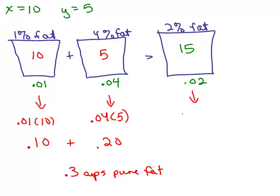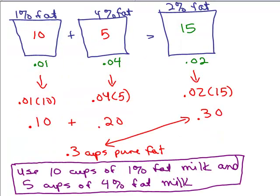And that should be the same as what's in my mixture. So what's in my mixture over here? .02 times 15. How do we multiply that out? 2 times 15. And move the decimal. It's .3 cups of fat. So yes, it matches, so our answer must be correct. Of course, you could also get these decimals by using your calculator, but you should actually be pretty good at doing it without a calculator. So now we just have to write the answer to our problem. So here's our final answer. Use 10 cups of the 1% fat milk and 5 cups of the 4% fat milk.